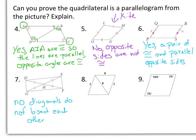Number 8: we have one pair of congruent sides. However, we're not told if that pair is parallel, and we do not know if the other opposite side is also 8. So number 8 is a no — not enough information.